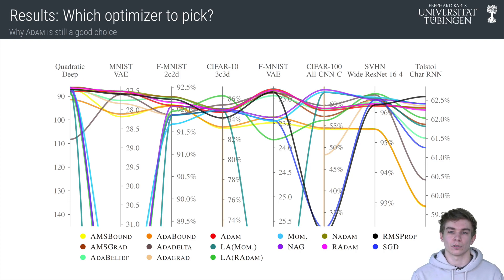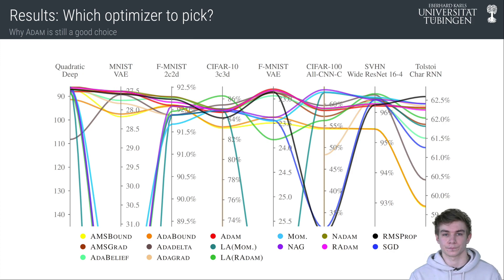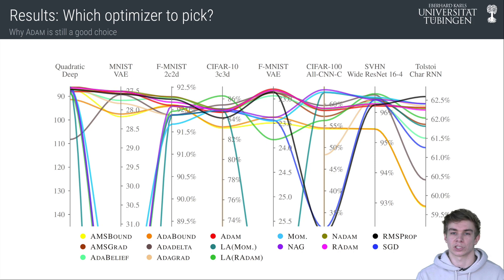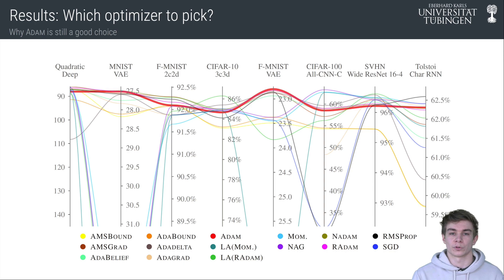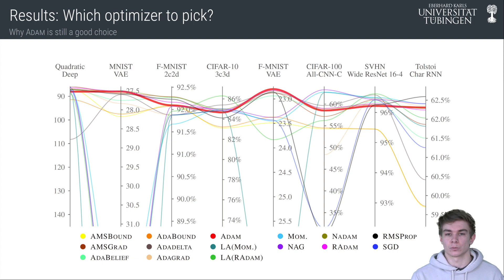We can also look at the performance of all optimizers across all eight test problems. Here each vertical axis represents the performance on one task, and the higher the line of an optimizer, the better the performance on that task. There is no single optimizer that dominates its competitors across all tasks — the lines often cross each other. Nevertheless, some optimizers generally perform well and land near the top; this is for example the case for Adam, shown with a red line. More recent methods fail to show a significant and consistent performance improvement over it. Results shown here use the large tuning budget with the long trapezoidal schedule, but other budgets and schedules support our conclusions.